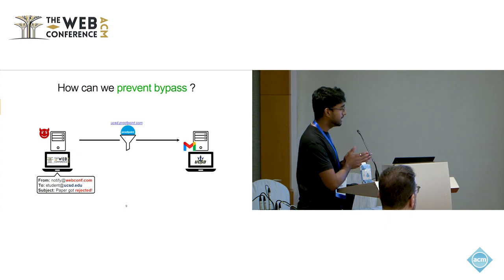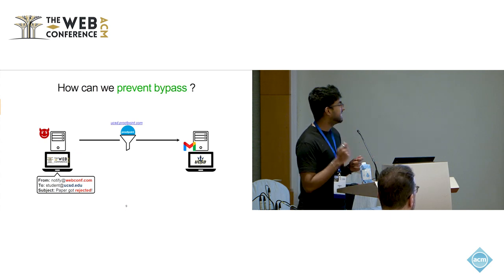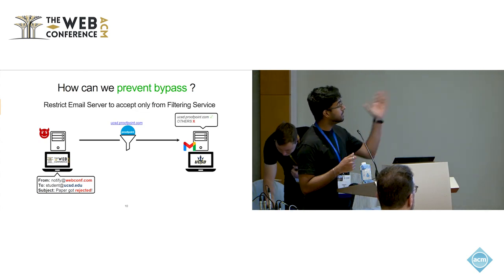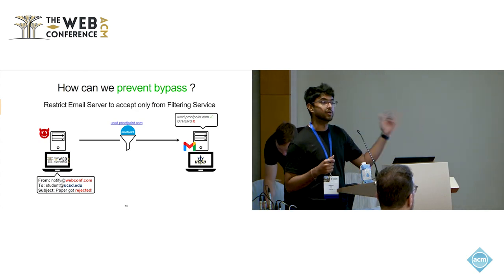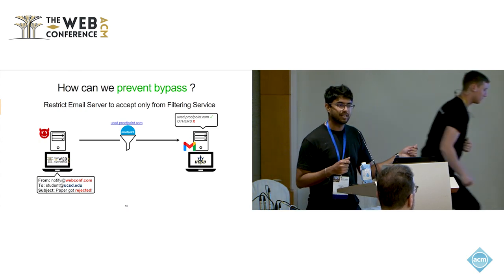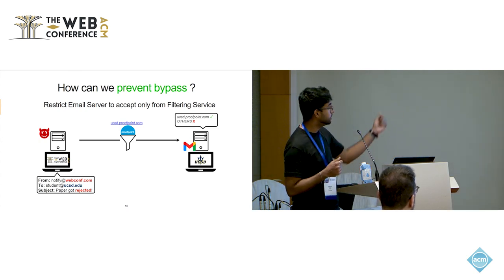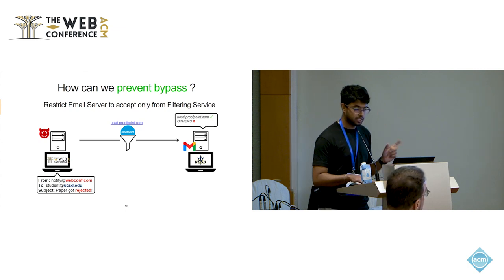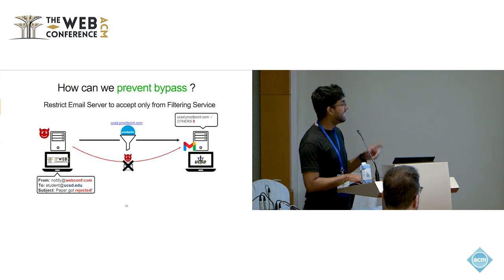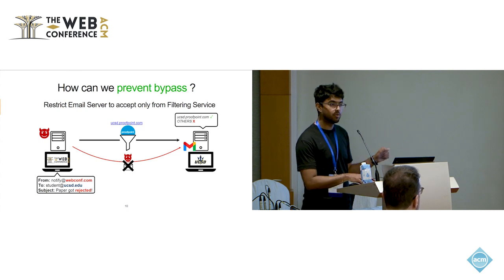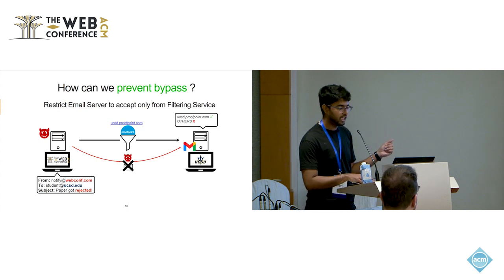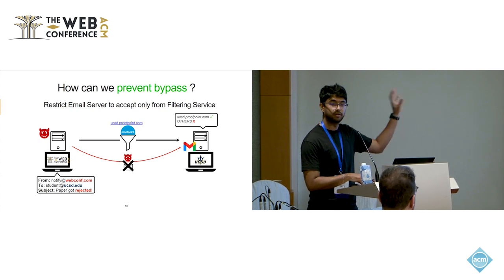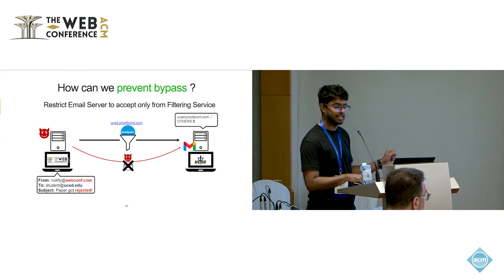So given all of this context, how can we set up email filtering correctly today? The solution is whitelisting. On the email provider side, you would have to set up rules which say: only accept email coming from your filtering service — for instance, UCSD.proofpoint.com: accept; everything else: reject. If you were to do such a rule on the provider side, then any attempts to bypass email by directly routing to the provider would be rejected. And again, this has to be done on the provider side and not the filtering service side, because by the nature of this bypass, the filtering service has no say in the matter.